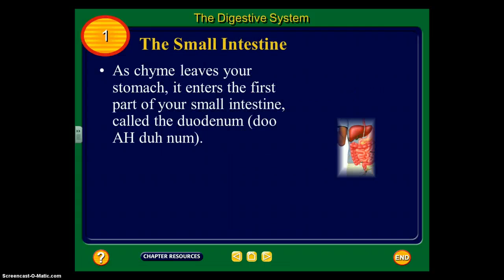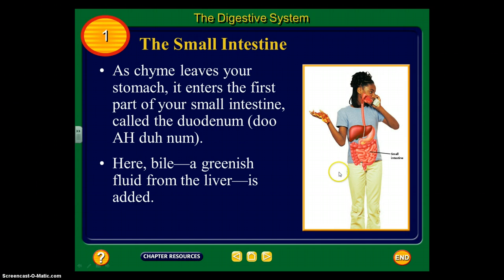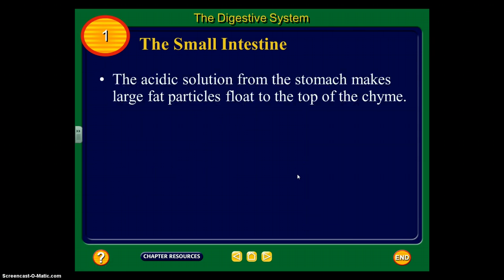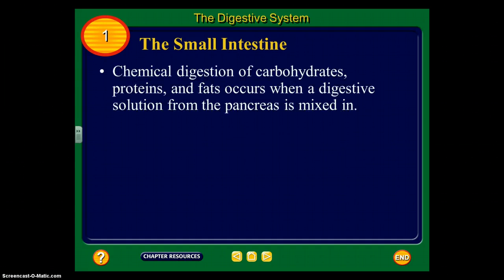As chyme leaves your stomach, it enters the first part of your small intestine called the duodenum. Here in the duodenum, bile — a greenish fluid from the liver — is added. The acidic solution from the stomach makes large fat particles float to the top of the chyme, and then the bile breaks up those large fat particles, similar to the way a detergent breaks up grease.